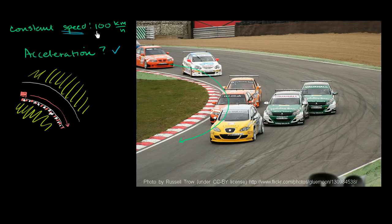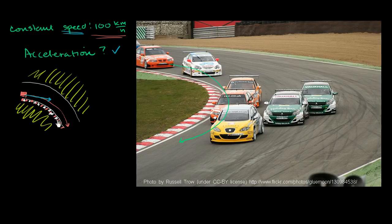If you think about its velocity, the magnitude of its velocity is constant — it is 100 kilometers per hour. But what is happening to the direction of the velocity? Velocity is a vector quantity; it has magnitude and direction. Up here at this point, it's starting to enter the curve, going in this direction. You tend to show vectors by arrows, with the arrow going in the direction of velocity. The length of the arrow shows the magnitude, so its length will always be constant.